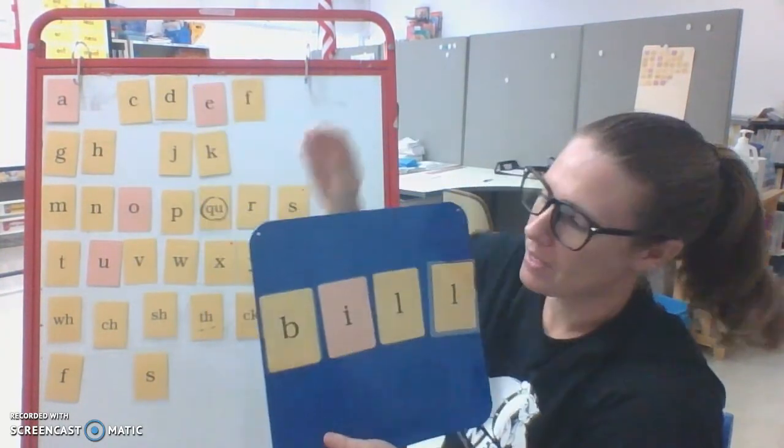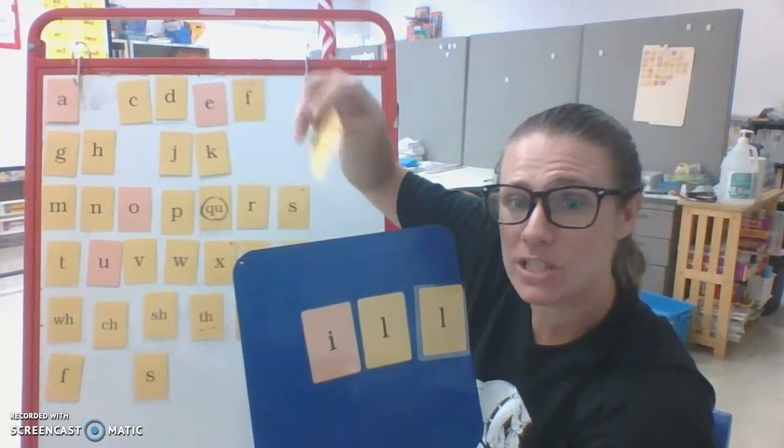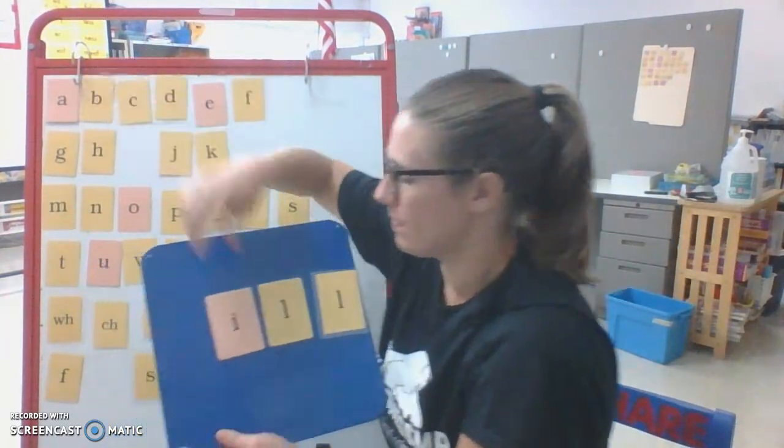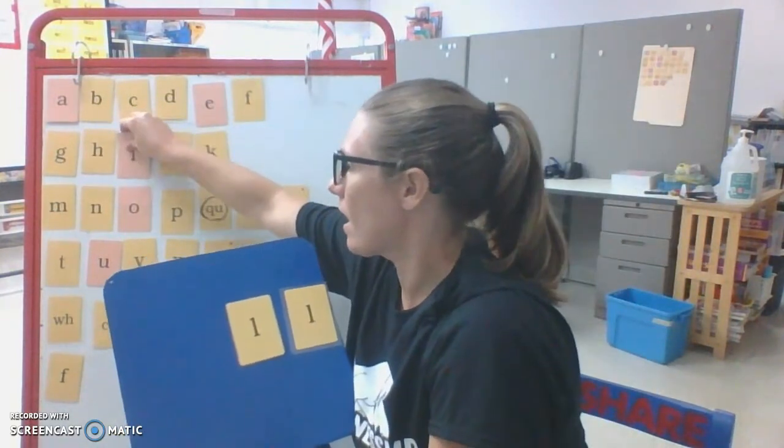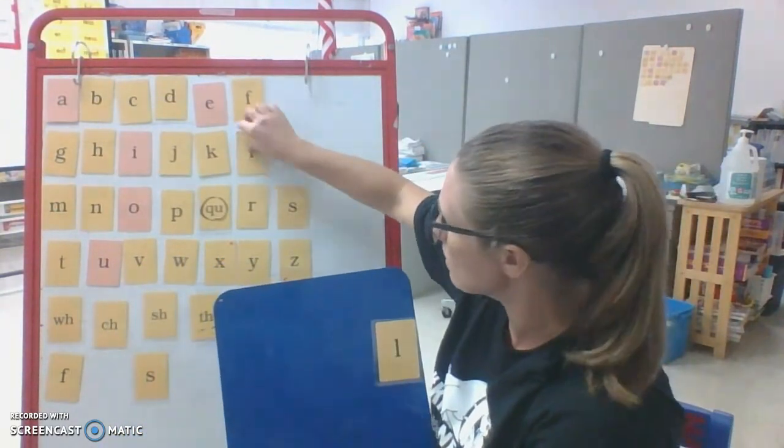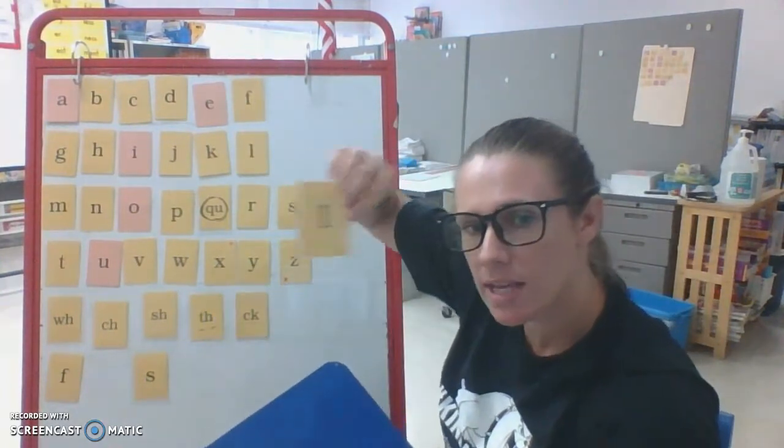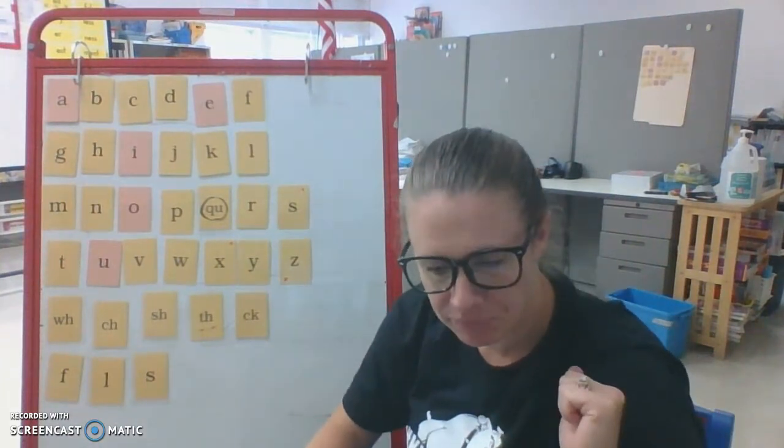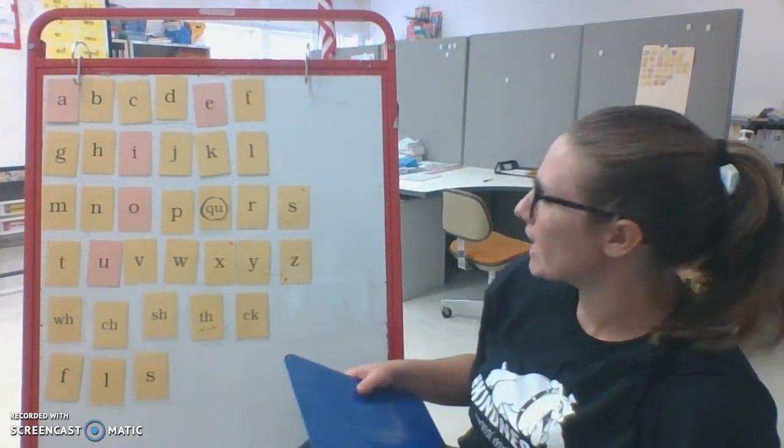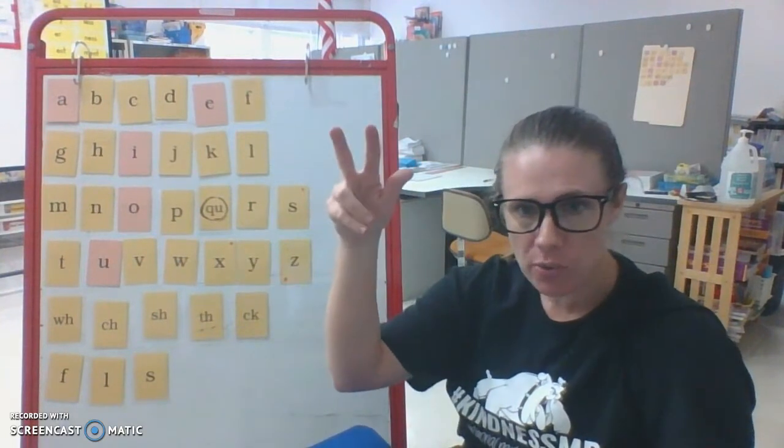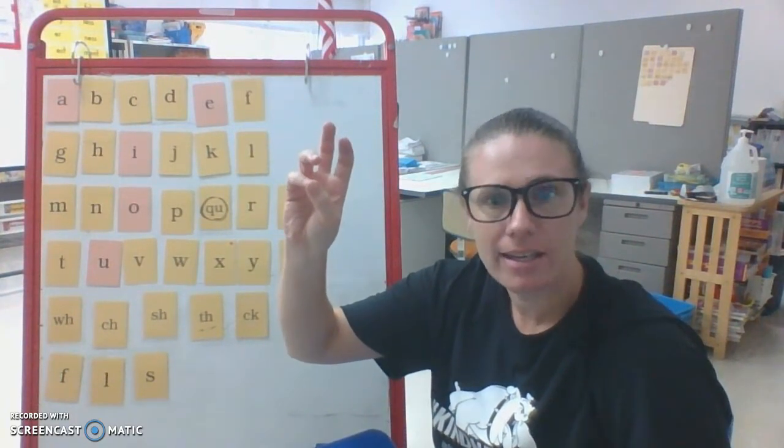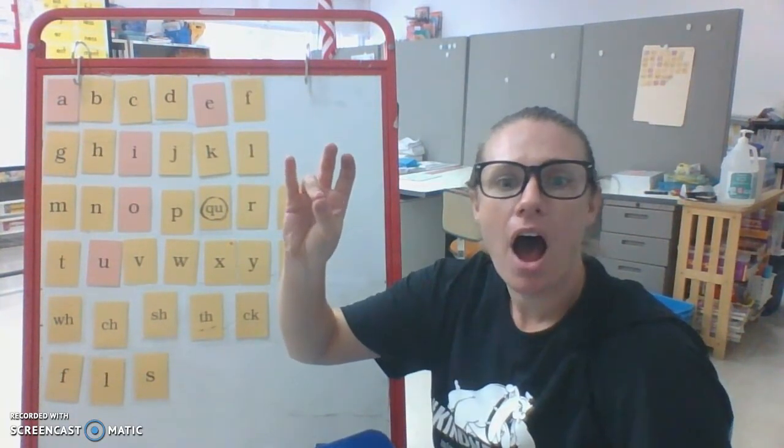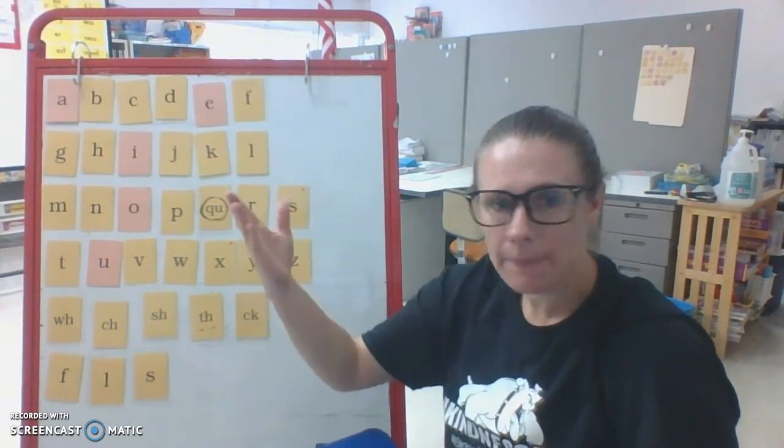And let's spell it away. Put them back in the right spots as you spell it. B, I, L, bonus L. Okay, what do you say, readers? One more word today. The word is toss. Like, I'm going to toss you a ball. Tap it out. T, O, S. Spell it with me. T, O, S, S. Build it.